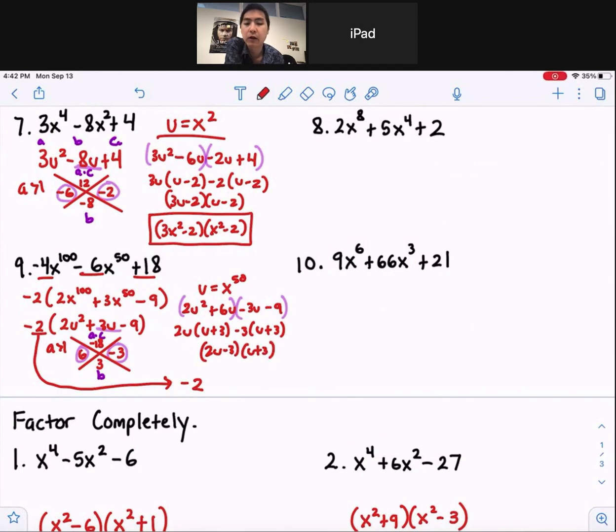And again, our u is substituted in for x to the 50th. So 2x to the 50th minus 3, x to the 50th plus 3.